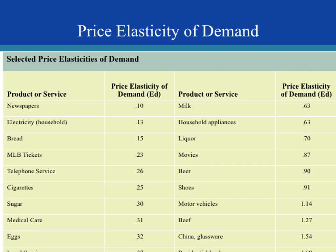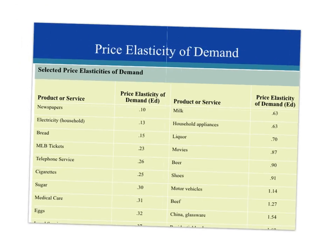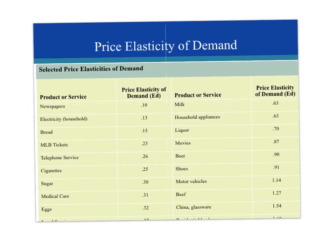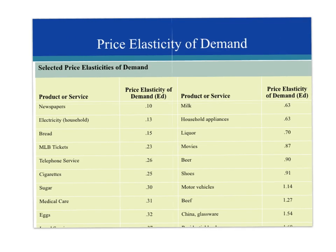Looking at some real-world products, things people consider necessities tend to have inelastic demand. Major league baseball tickets, bread, electricity, newspapers, sugar, medical care, and eggs all have inelastic demand. It is interesting that medical care appears more sensitive to a change in price than major league baseball tickets, but that's what the data shows.